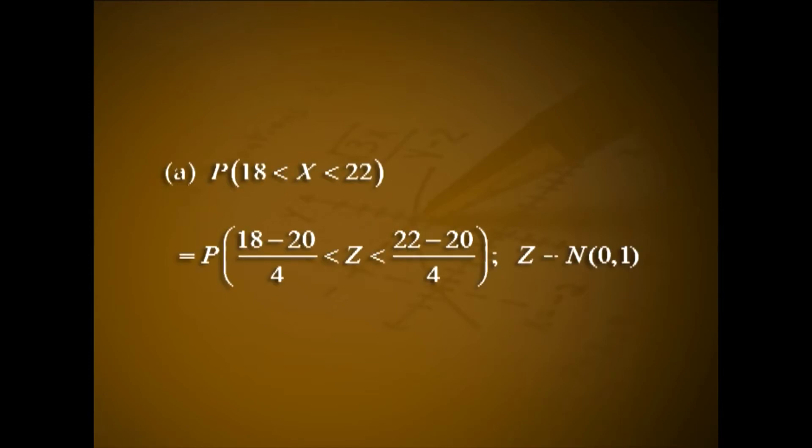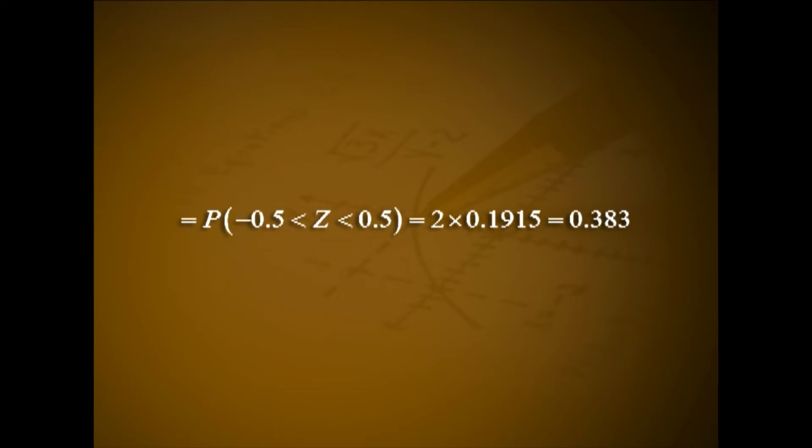Problem 3: The average project completion time of a real estate company is 20 months with a standard deviation of 4 months. Assuming project completion time follows approximately a normal distribution, find the probability that the completion time falls between 18 and 22 months. Let x ~ N(20, 4). P(18 < x < 22) = P((18-20)/4 < z < (22-20)/4) = P(-0.5 < z < 0.5) = 2 × 0.1915 = 0.383.